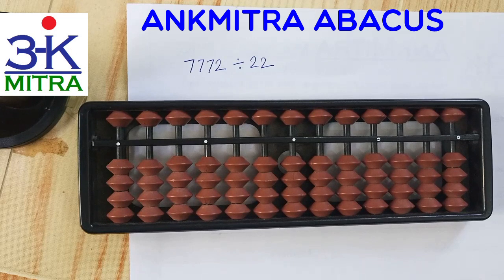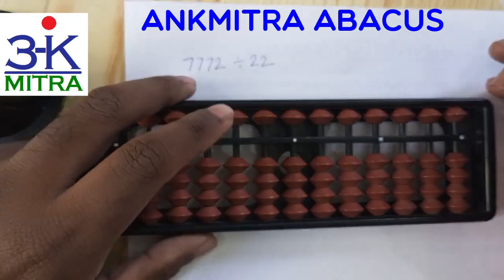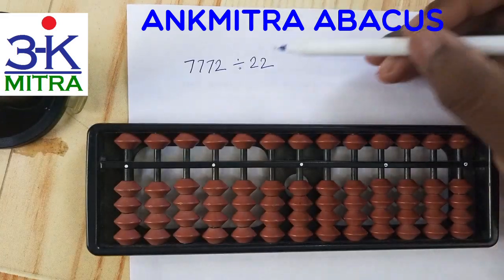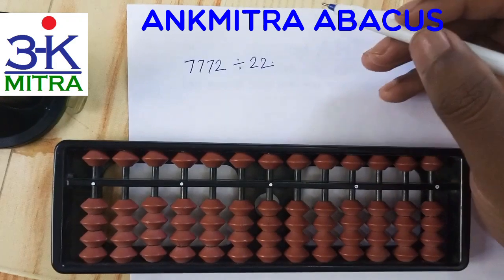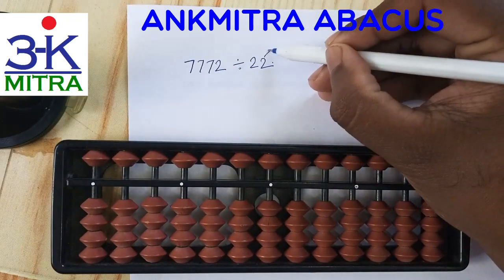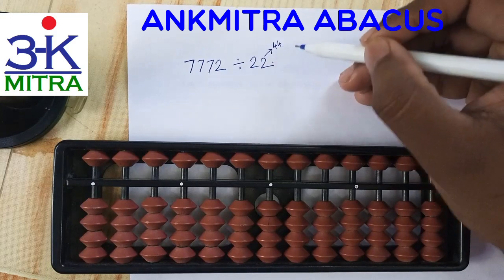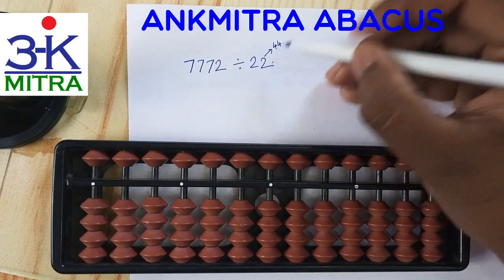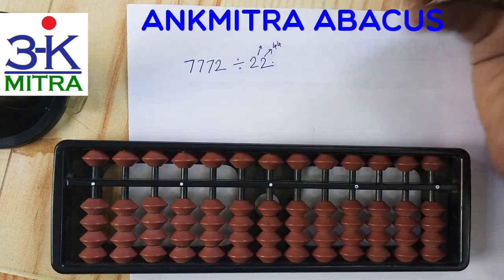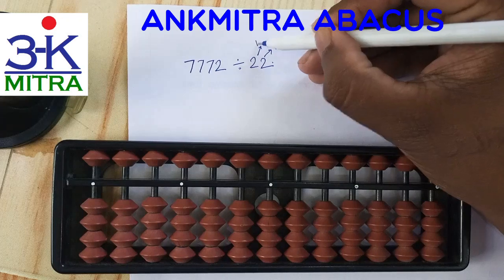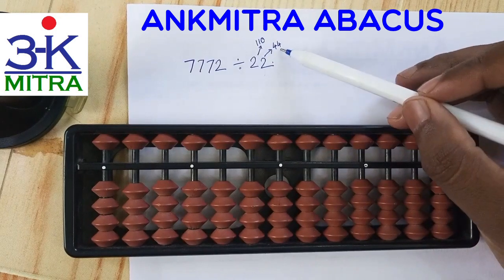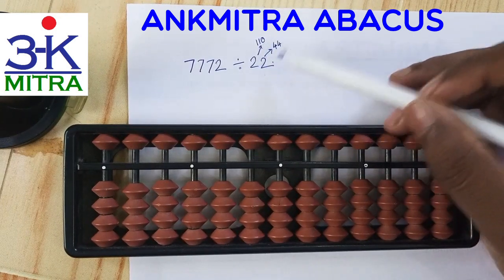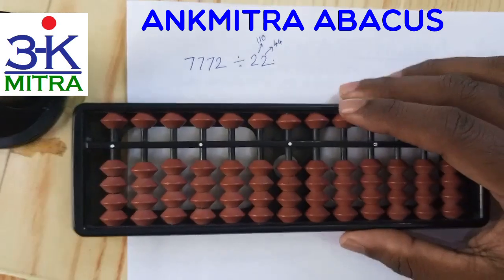In the first method, where the student doesn't know the table of 22, we need to find a few reference values. 1 times 22 is already written on the paper. 2 times 22 is 44, so I'll write down 44. 5 times 22 is 110, so I'll write that down as well. So we have three numbers from the table of 22 in front of us: 1×22, 2×22, and 5×22.